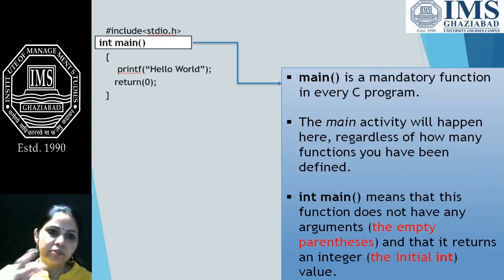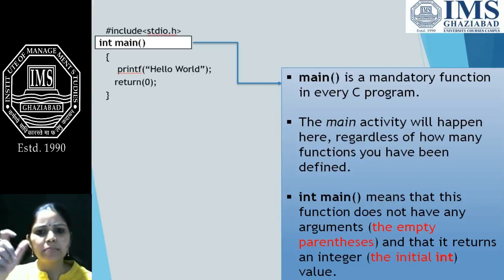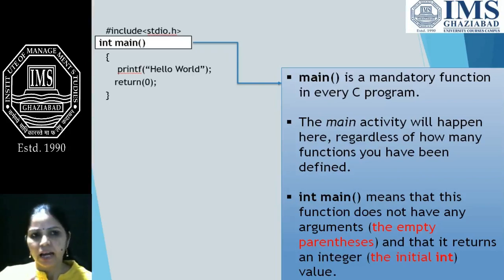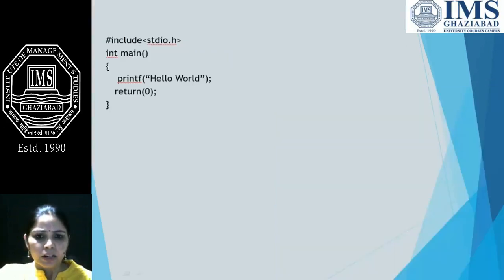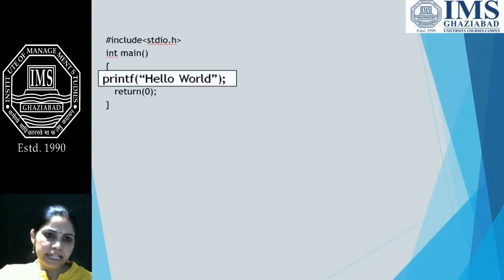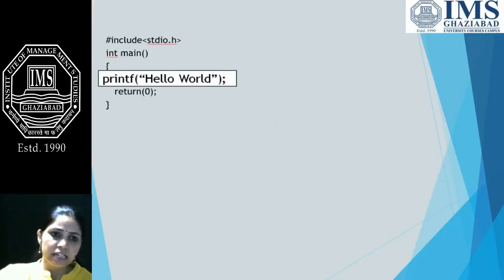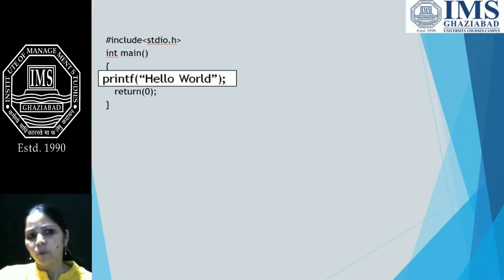In int main we have empty parentheses. Empty parentheses indicate that the main function does not have any argument. Before main we have written int, which indicates that the function returns an integer value. Now, we also have curly brackets — these curly brackets are opened and closed, and whatever is written inside them forms a block. The block of statements is executed in sequence.